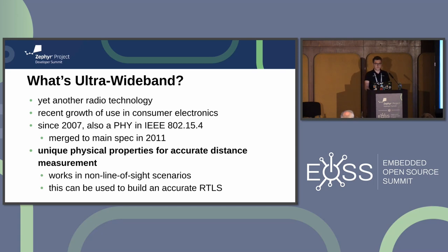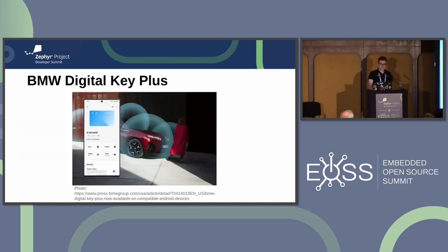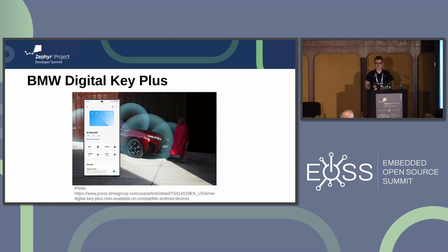This distance measurement capability is already being used in widely available products. One example is Apple AirTag — a tracker you can attach to your personal belongings where Ultra Wideband is used to find the exact distance between your phone and the lost item. Another example is BMW Digital Key Plus, an app that turns your smartphone into a keyless entry system. The best thing about that is it's immune to relay attacks because it measures the actual distance between the car and your phone, making it much safer.